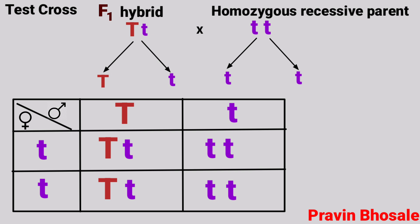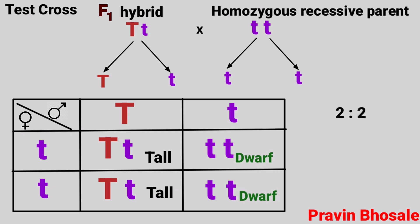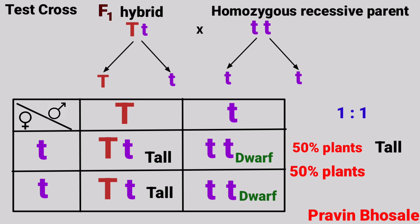Out of four plants, two plants are tall and two plants are dwarf. The ratio is 2:2, that is 1:1. In test cross, with reference to height, 50% plants will be tall and 50% plants will be dwarf. Please note: in test cross, consider any pair of contrasting characters — it can be position of flower, color of flower, or height of a plant — 50% plants will show the dominant character and 50% plants will show the recessive character.